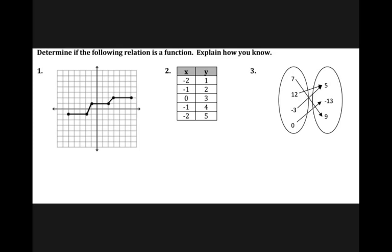Anytime we are looking at graphs, there is a test to determine whether or not the graph represents a function, and that test is called a vertical line test. What I'm going to do is draw vertical lines all throughout my graph. What I'm checking is that my vertical lines only cross the graph in one spot. All four of my vertical lines are crossing my graph in one spot, so this is a function.